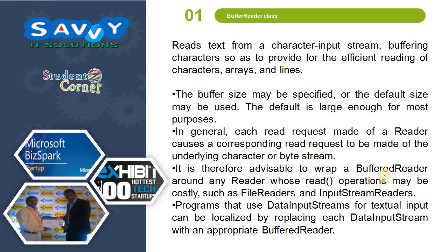BufferedReader reads text from a character input stream, buffering characters so as to provide efficient reading of characters, arrays, and lines. The buffer size may be specified or the default size may be used — the default is large enough for most purposes. In general, each read request made of a Reader causes a corresponding read request of the underlying character or byte stream. It is therefore advisable to wrap a BufferedReader around any Reader whose read operations may be costly, such as FileReader and InputStreamReader. Programmers using DataInputStream for textual input can localize it by replacing each DataInputStream with an appropriate BufferedReader.